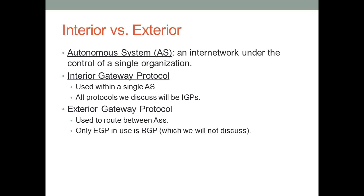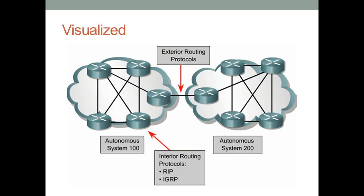BGP is not discussed on the CCNA, so I just wanted to mention it briefly. To visualize exterior versus interior routing protocols, I've shown a couple of different organizations with their autonomous system numbers — AS 100 and AS 200. Within these two autonomous systems we're using an interior routing protocol like RIP or IGRP. We won't be discussing IGRP but we will discuss its big brother, EIGRP. Between the two autonomous systems, an exterior routing protocol like BGP is used.